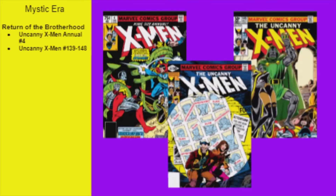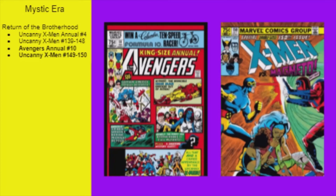This era kicks off with the 4th X-Men Annual, then kicks into Days of Future Past, the introduction of the New Brotherhood, the slow return of Magneto, and what I like to call the Dark Storm Saga with Doctor Doom, from issues 139 to 148. The X-Men then pop up in the 10th Avengers Annual, where we first meet Rogue, who steals Carol Danvers' powers. Carol then joins the X-Men for a bit as they fight Magneto in issues 149 to 150, plus Cyclops returns after mourning Jean for 10 issues.